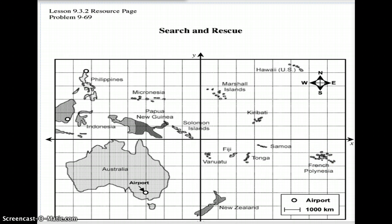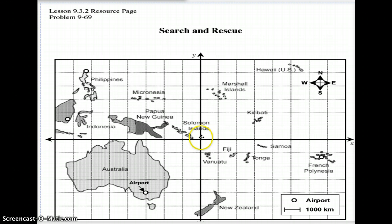The hot air balloon was supposed to go on a direct path down to the French Peninsula — you may want to track what it was supposed to do. However, hot air balloons don't have a lot of control over where they go; they kind of go in the direction of the wind. Their last known place was at negative 1,000, positive 1,000. Each unit on this map is 1,000 kilometers, so that's somewhere right above the Solomon Islands.